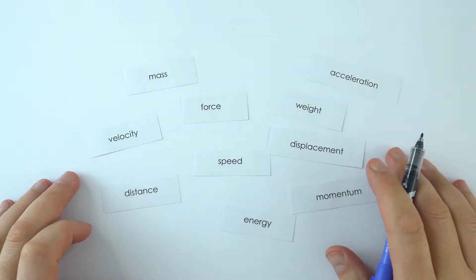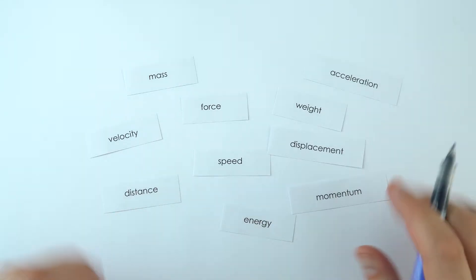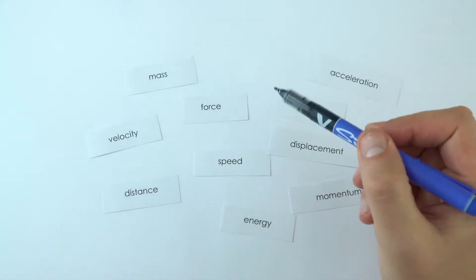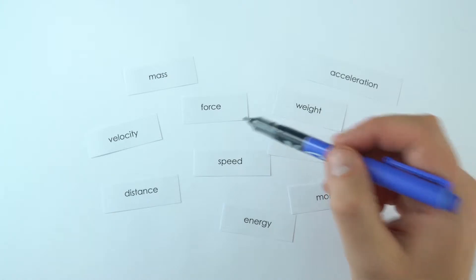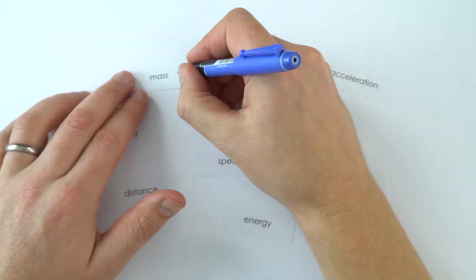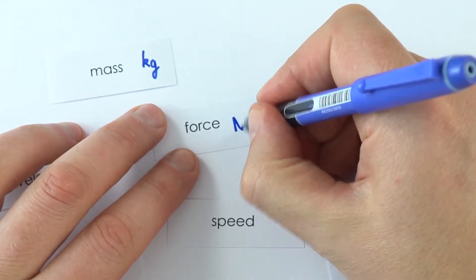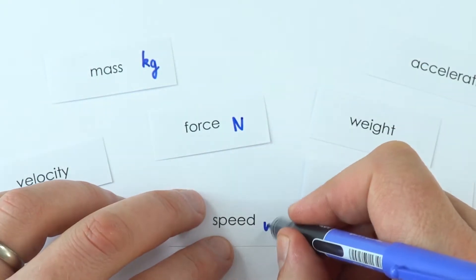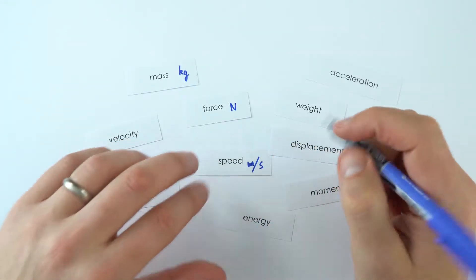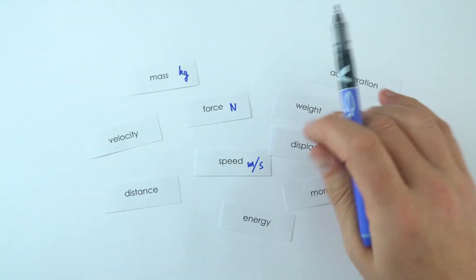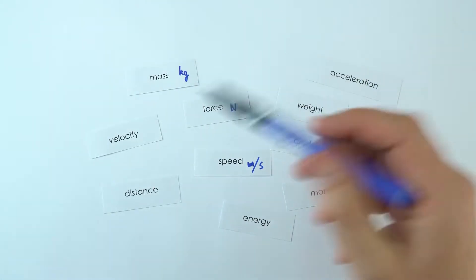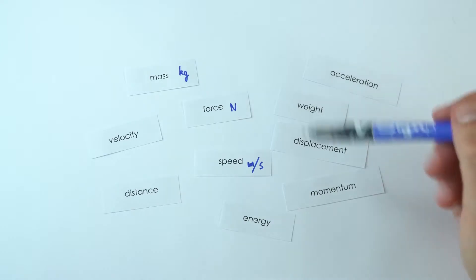So here we have some quantities that we might measure or calculate in physics, and for each of these quantities we also measure them in a certain unit. For example, we measure mass in kilograms, we measure force in newtons, we measure speed in meters per second, and you're going to become very familiar with these as you do more of the GCSE course. So I'm just going to fill in the rest of the units for these different quantities.